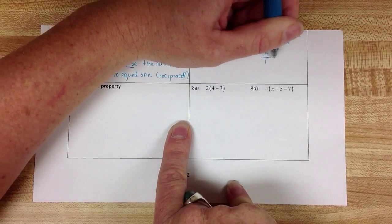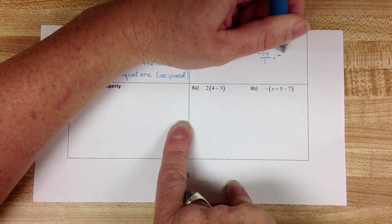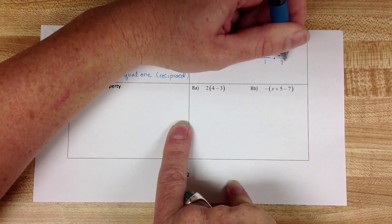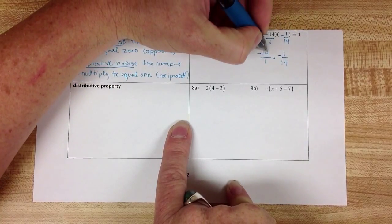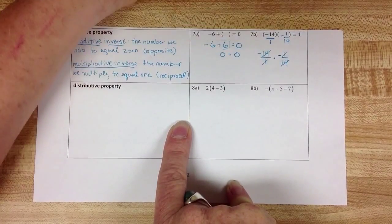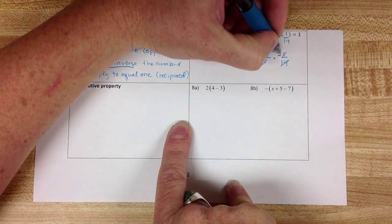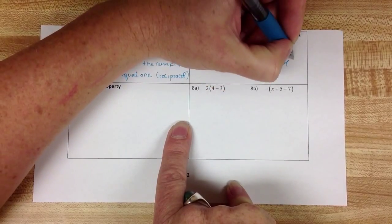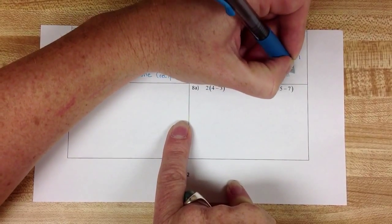Because if you look here, negative 14 over 1 times negative 1 over 14, the fourteens will cancel out, the ones will cancel out, the negatives will cancel out, and we'll end up with 1 equaling 1.